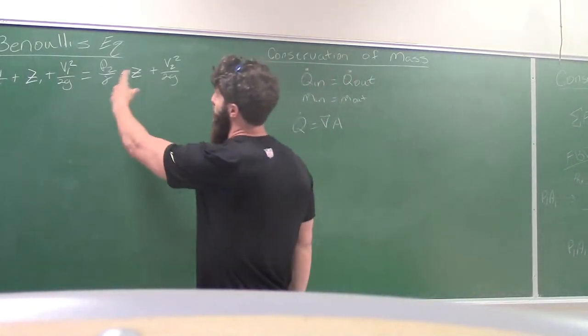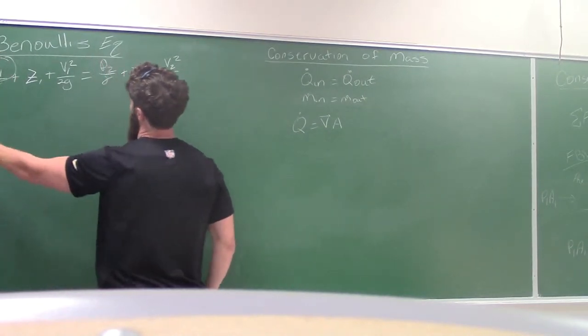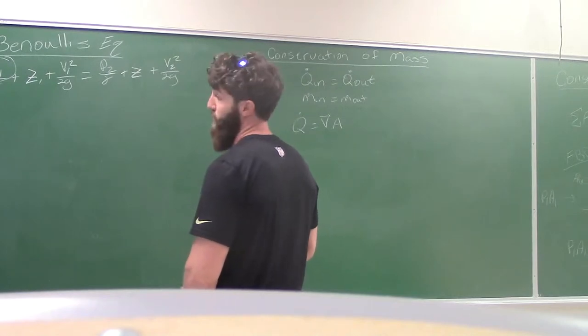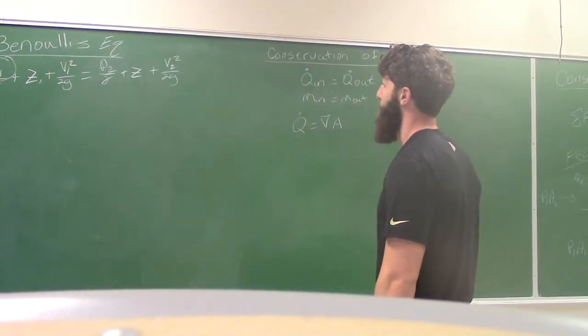Alright, so once you come over here to Bernoulli's equation, the only thing we're looking for now is P1 because everything else we know. So once we can solve, we'll find our P1, and that's the last unknown that we'll be looking for. And that's all there is to it? All there is to it. Alright, well let's go do the experiment. Alright, cool.